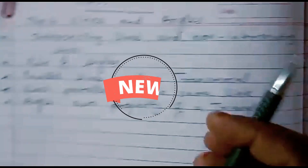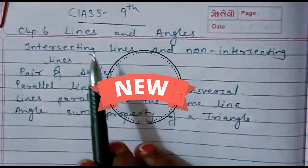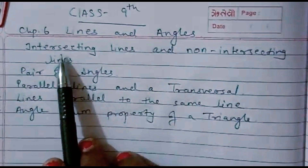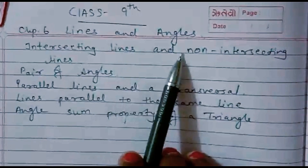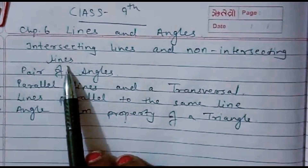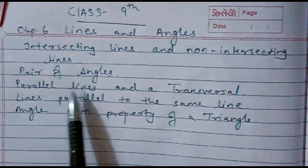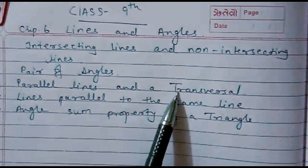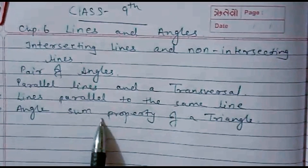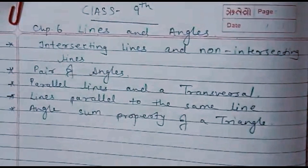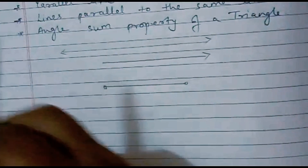Hello everyone, today we are going to start with a new chapter: Lines and Angles. We are going to complete this chapter covering intersecting lines and non-intersecting lines, then pair of angles, then parallel lines and a transversal, lines parallel to the same line, and angle sum property of a triangle. So let us first recall what we have learned in the previous classes.